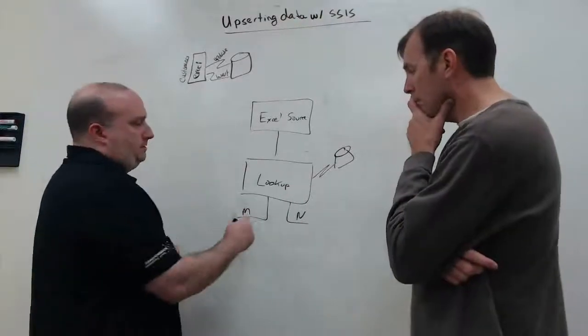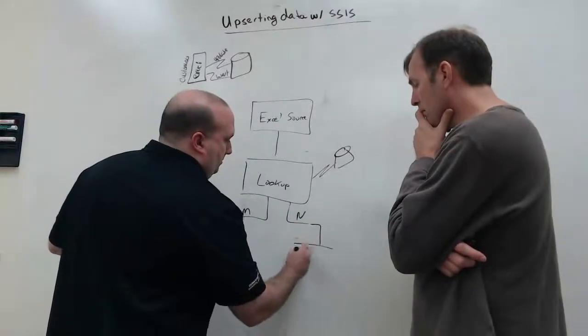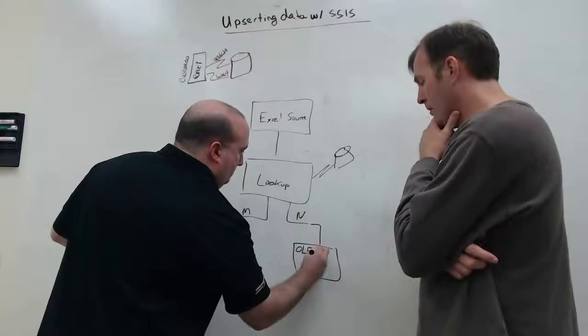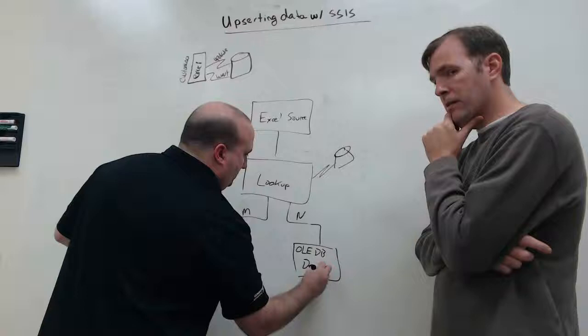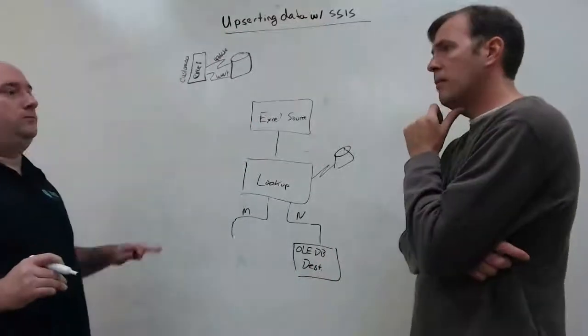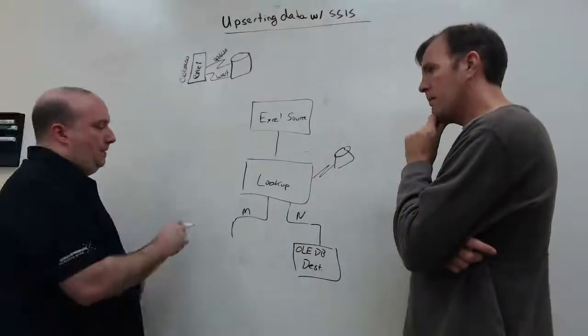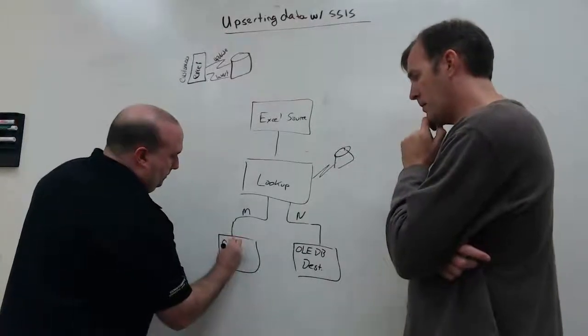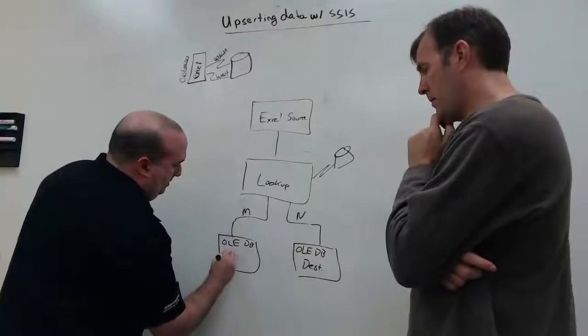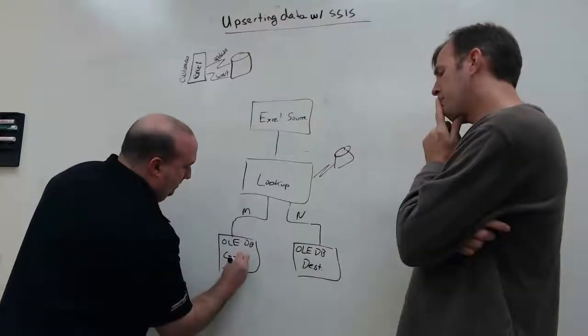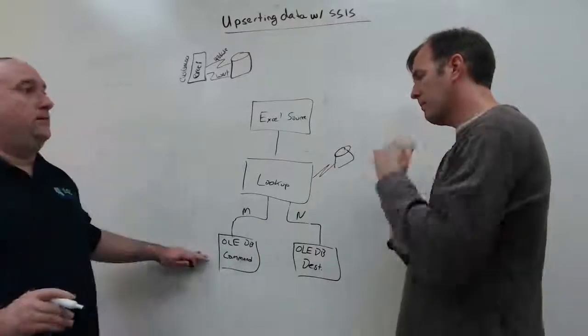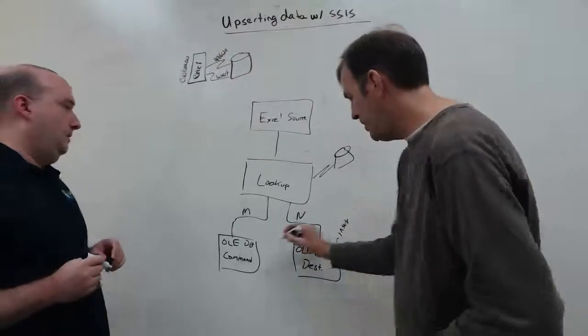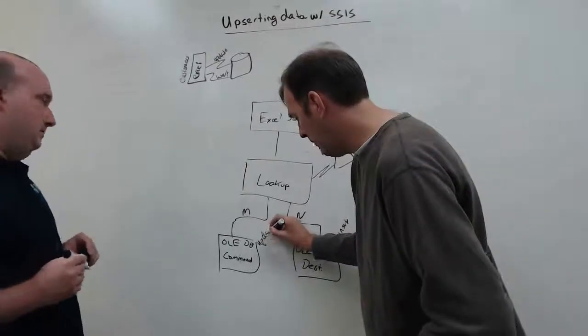If it's not matching, this one's pretty simple. We just need to insert. So, we can just use, in this case, an OLE DB destination, and then just insert the data directly into the table. No particular issues with that. If it's a match, what we want to do is direct the rows to an OLE DB command, not a destination. And the command lets us basically run a single SQL statement for each row that passes through it. So, this is going to be inserts, and this is my updates.